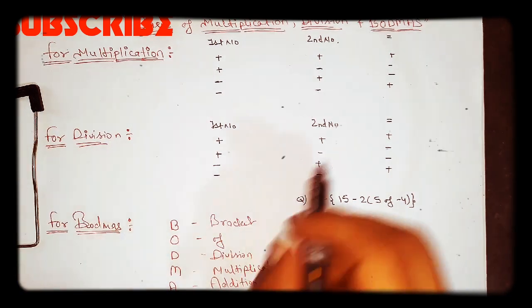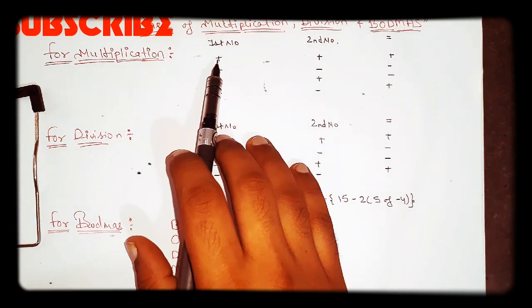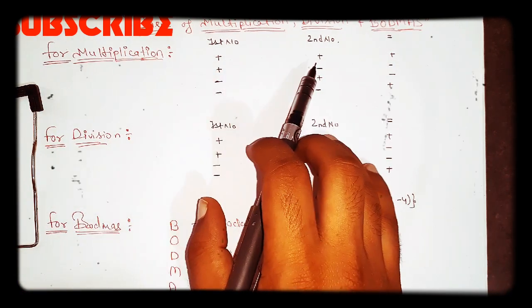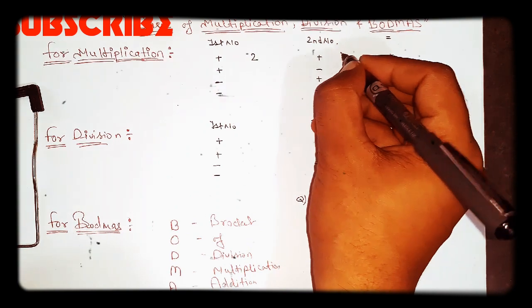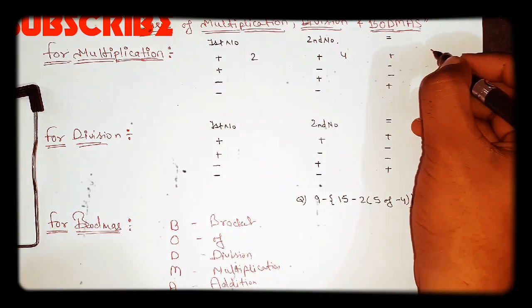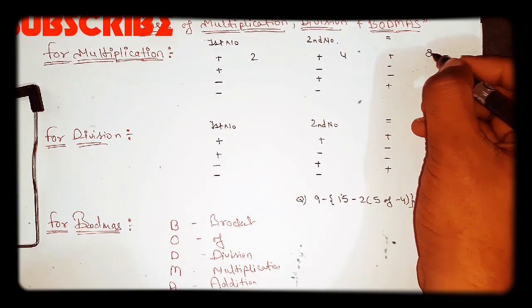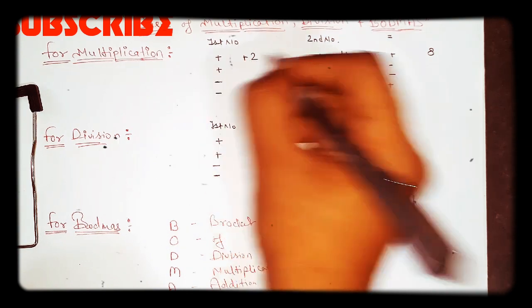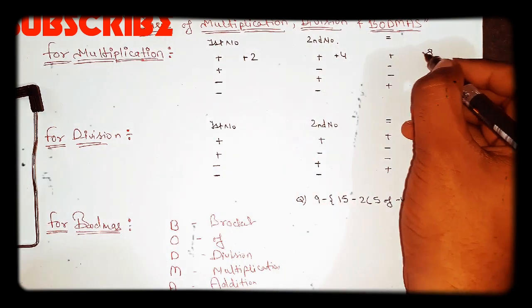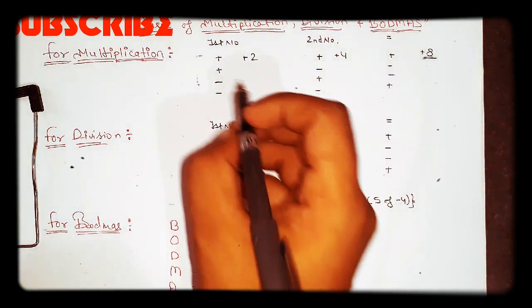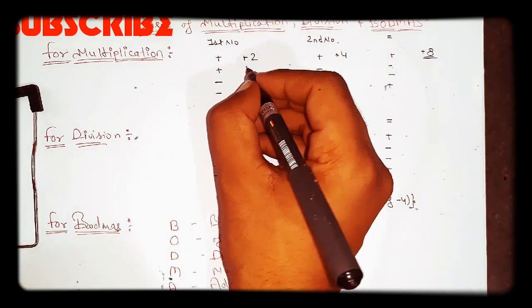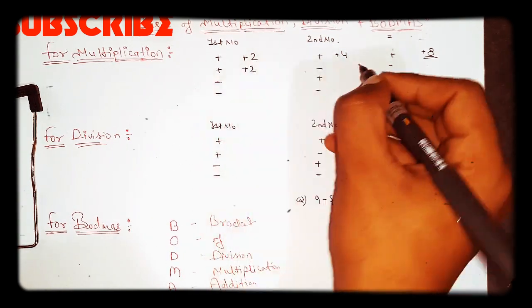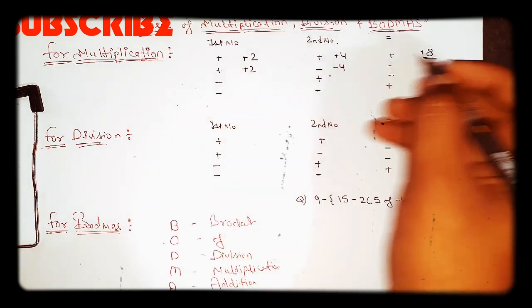For multiplication, if the first digit is positive and the second digit is positive, then the answer will be positive. For example, 2 multiplied by 4 equals 8, and since both are positive, the answer is also positive.